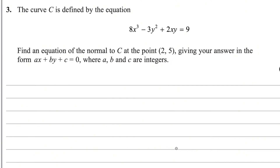The paper reference code is WMA14/01. Let me read the statement for this question. The curve C is defined by the equation 8x³ - 3y² + 2xy = 9. Find an equation of the normal to C at the point (2, 5), giving your answer in the form Ax + By + C = 0, where A, B and C are integers.